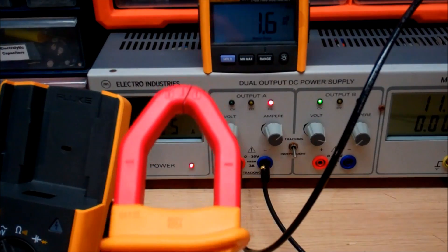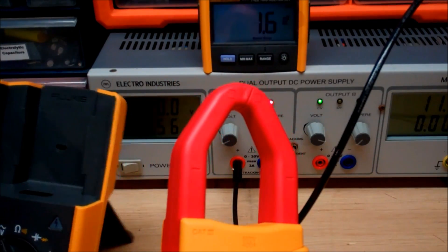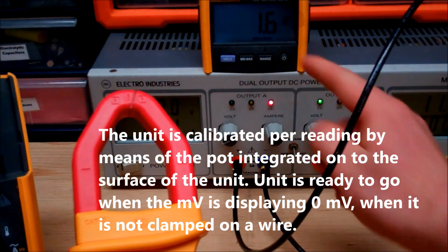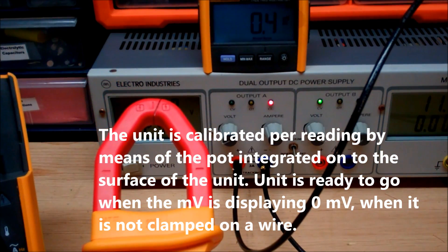Now as you can see right here we have our unit plugged into the Fluke 233. You can see that it's not clamped on to anything and reading 1.6 so the first thing we have to do is just zero that out.